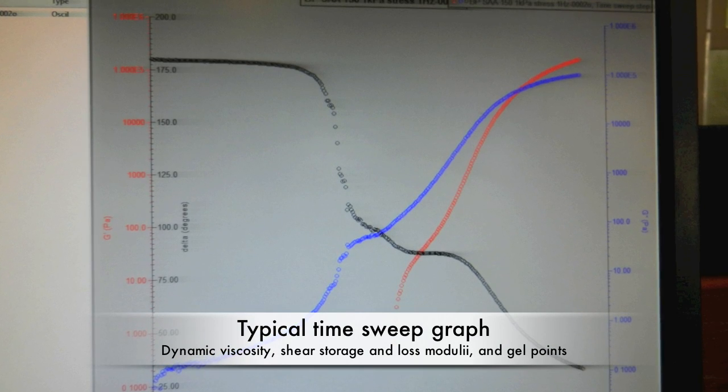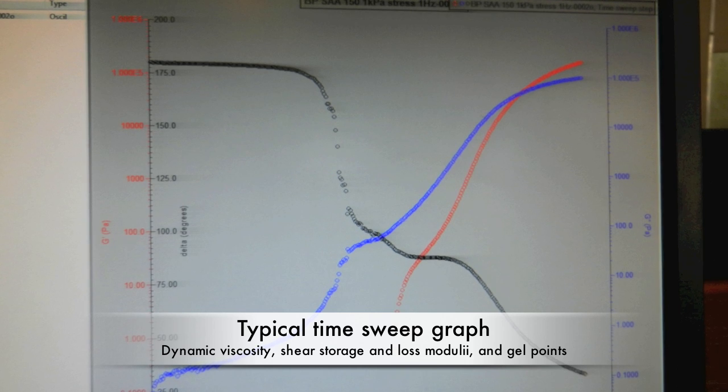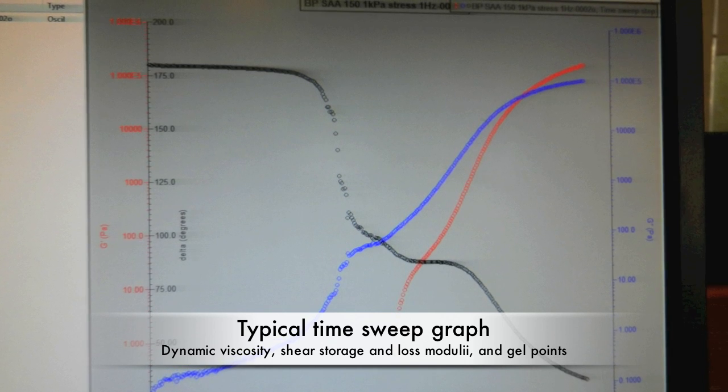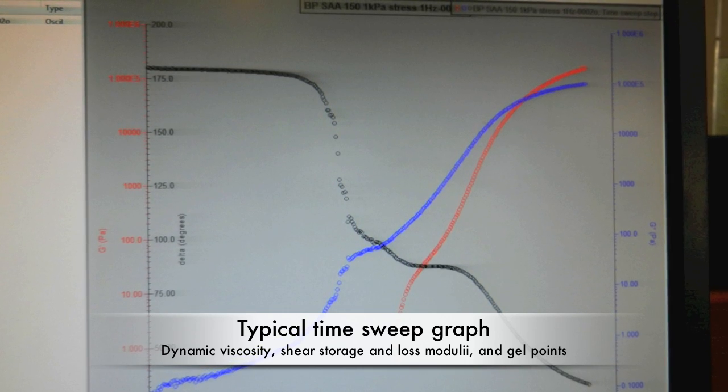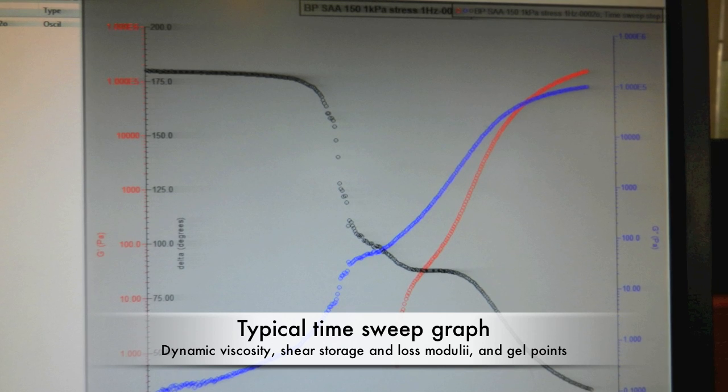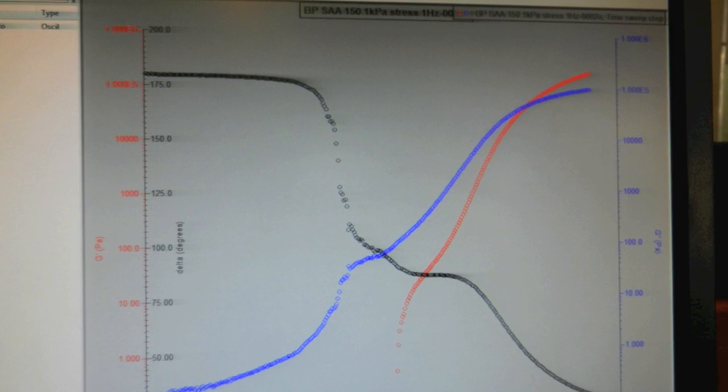Here's an example of a typical time sweep graph. The graph that appears can be used to analyze many parameters including the dynamic viscosity, storage and loss moduli, gel points, along with steady shear viscosity and complex or oscillating viscosity.